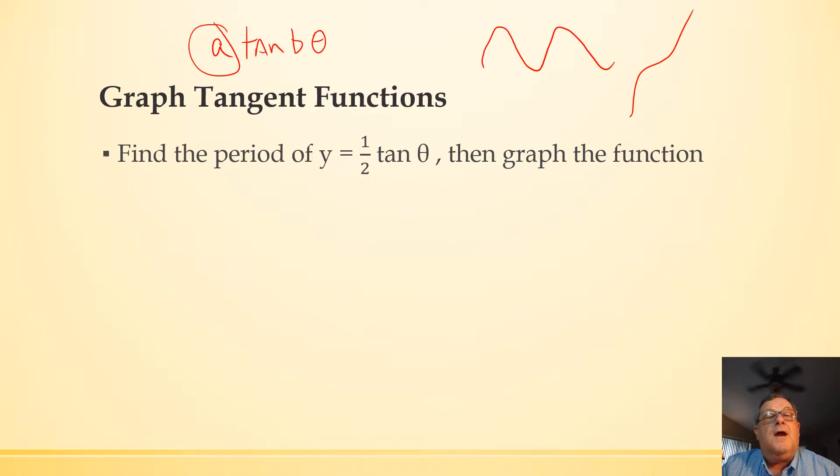Now, we're asked to find the period. So, the period for a tangent function is 180 over the absolute value of b. Well, in this case, b is 1. So, the period then is 180 over the absolute value of 1, which is just going to equal 180.